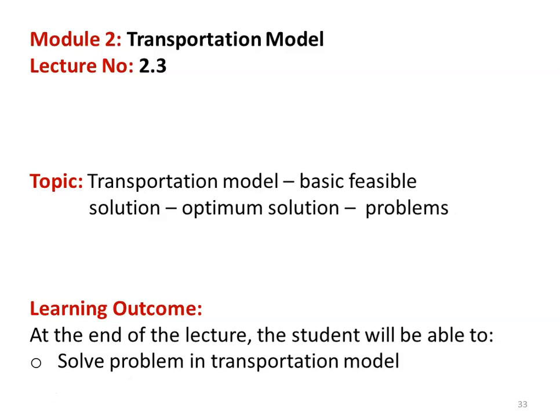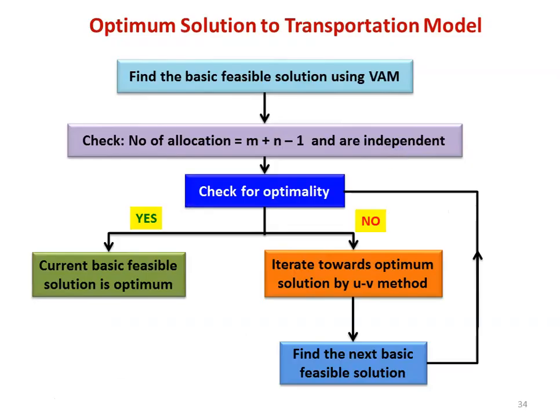The learning outcome of this lecture: at the end of the lecture, the student will be able to solve problems in the transportation model. This is the flowchart for finding the optimum solution for a transportation problem. First, we have to find the basic feasible solution using Vogel's Approximation Method, because among the three methods, Vogel's Approximation Method gives the minimum transportation cost. We can start with any method, but the number of iterations will be less for the optimum solution when using Vogel's Approximation Method.